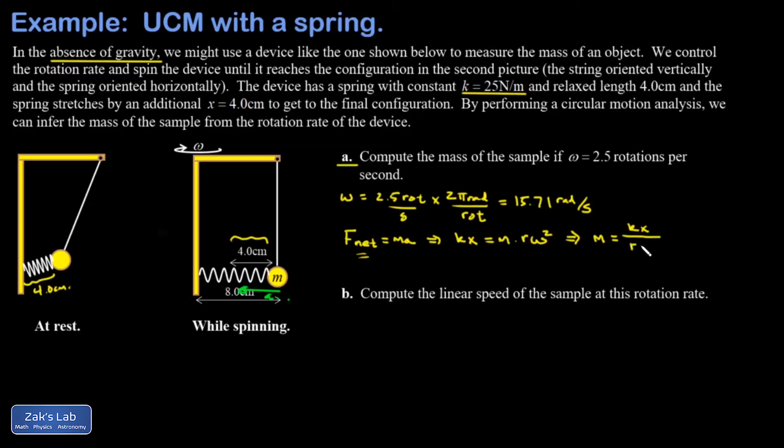That's kx over r omega squared. We plug in our spring constant k, x is the stretch length of the spring relative to its equilibrium length and that's four centimeters or 0.04 meters, r is the radius of curvature of the path of this mass and that's eight centimeters, and omega was 15.71 radians per second and I've got to square that. We get 0.0506 kilograms, which would look nicer as 50.6 grams.